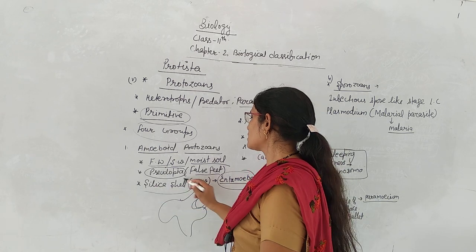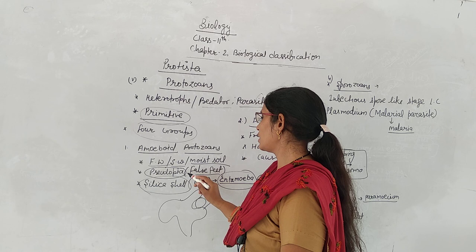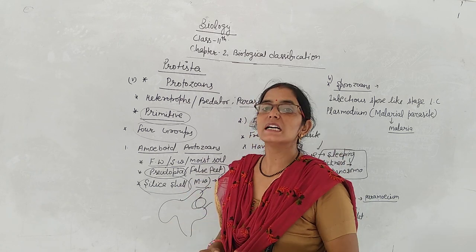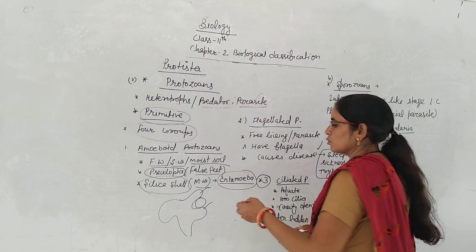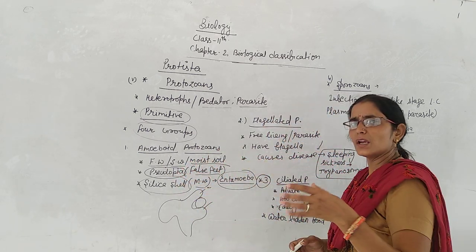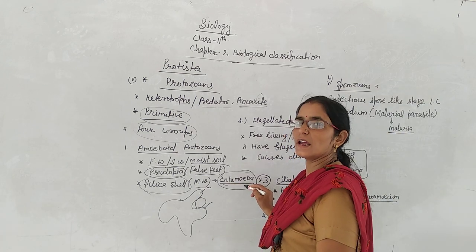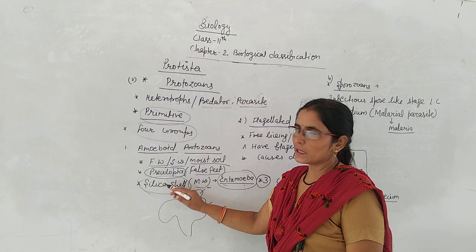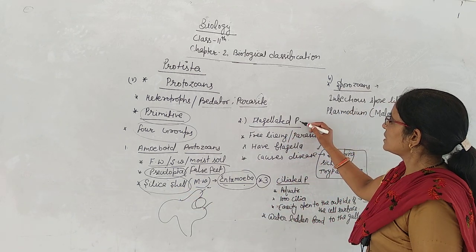The main function is food particle anchoring and intake. There are also silica cells, especially in marine water. This is Amoeboid Protozoa — it has pseudopodia and silica cells.